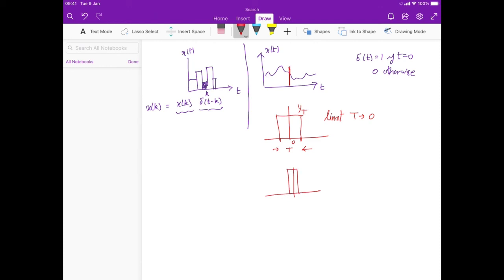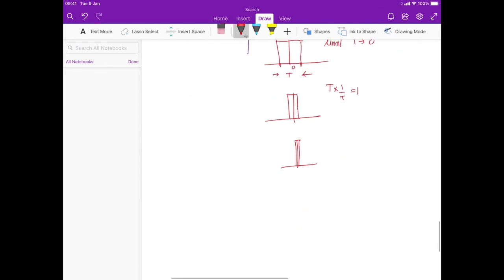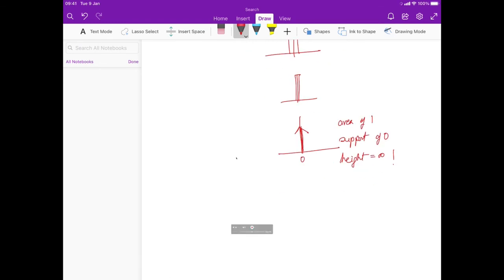We get taller and taller rectangles, but the area which is t times 1 over t is going to be 1. In the limit, we represent this by an arrow pointed at 0. This has an area of 1 but has a support of 0 and a height of infinity. This is a pretty weird function, and it was defined by the physicist Dirac, so it's called the Dirac delta function.